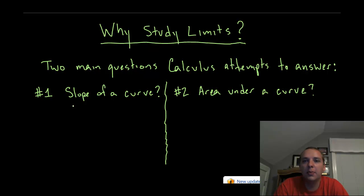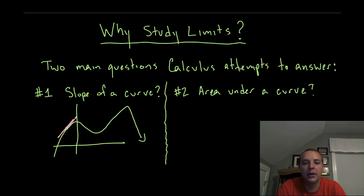If you take a big picture view of a Calculus 1 course, there are really two main questions that we're trying to answer in this class. The first one is, what's the slope of a given curve? So if you have a curve here and you highlight a particular value, let's say like right here, we're interested in what the slope would be instantaneously at that point.